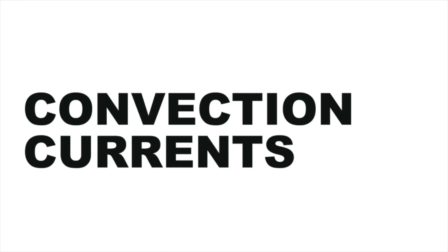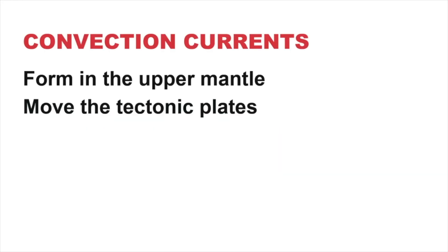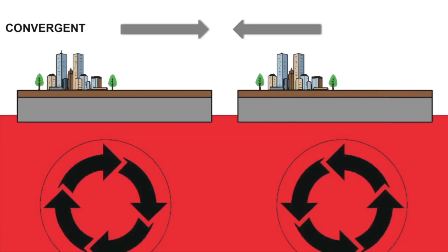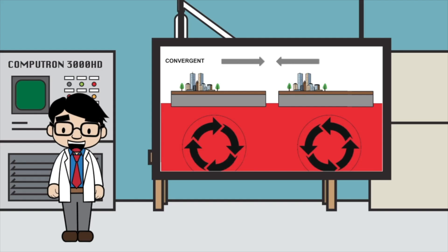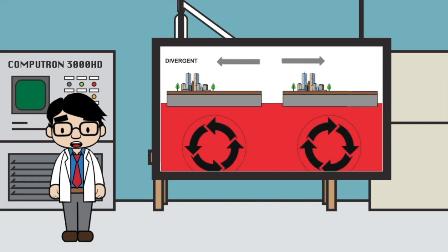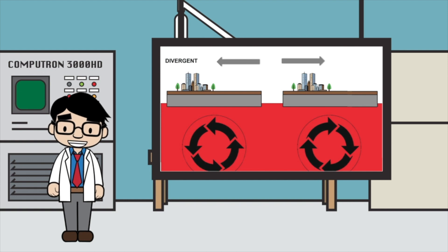Convection currents play an important role in plate tectonics, particularly the ones that are formed in the upper mantle, as they move the tectonic plates around. The flow of two convection currents in the mantle will cause the tectonic plates above to be convergent, while the flow in the opposite direction will cause the plates to be divergent.